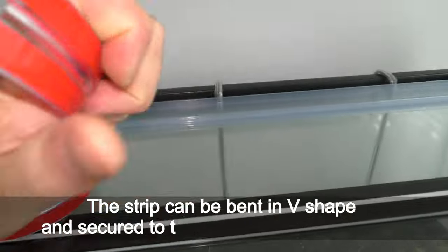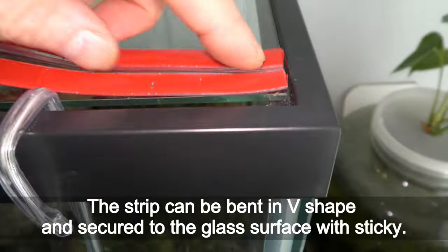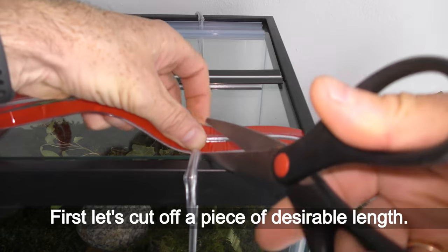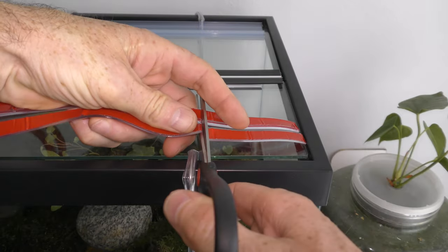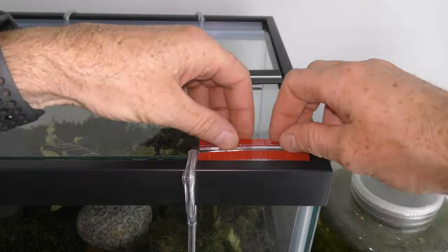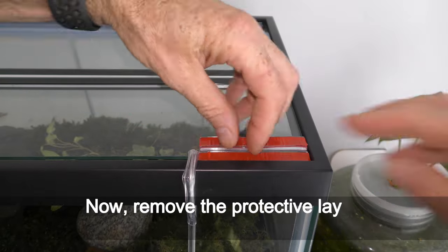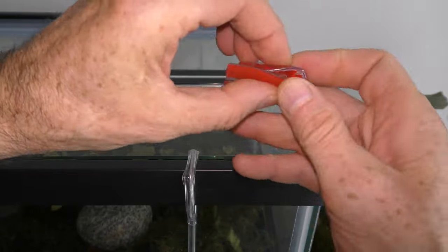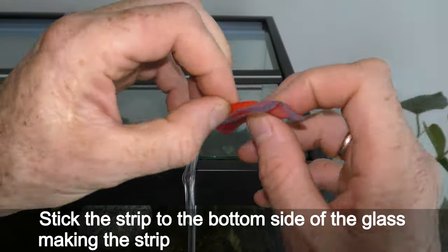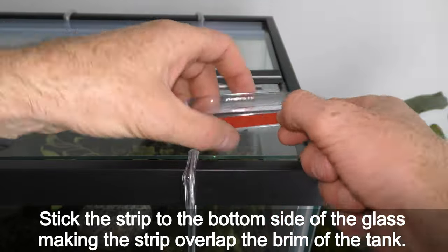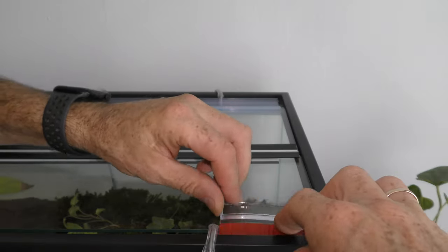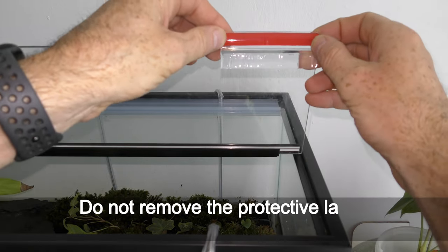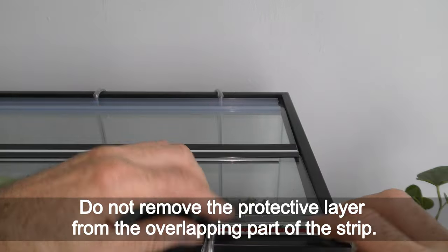The strip can be bent in V-shape and secured to the glass surface with adhesive. First, let's cut off a piece of desirable length. Now remove the protective layer from only one sticky surface of the strip. Stick the strip to the bottom side of the glass, making the strip overlap the brim of the tank.